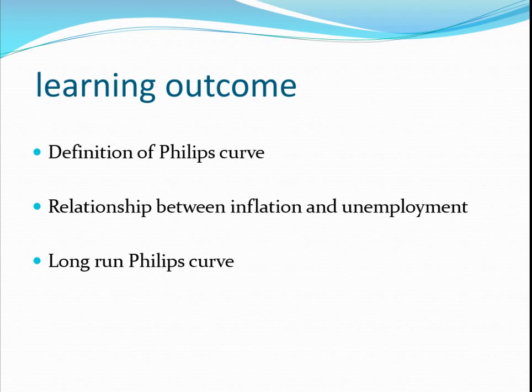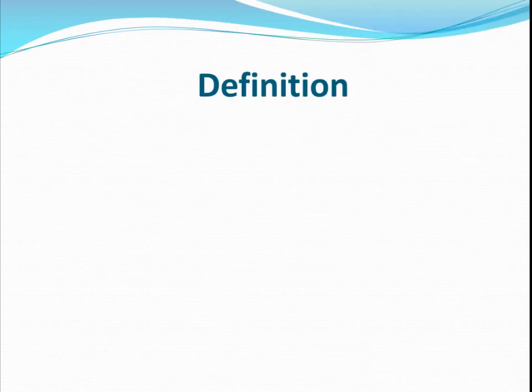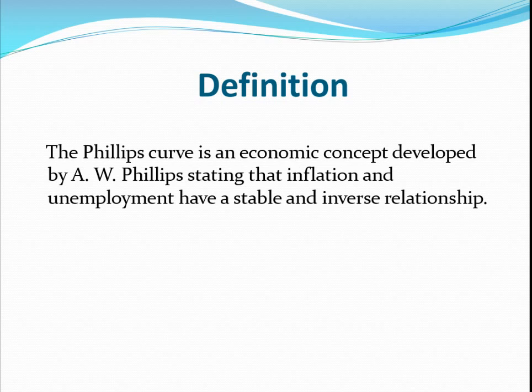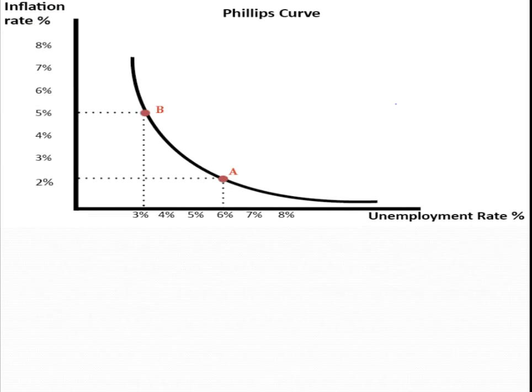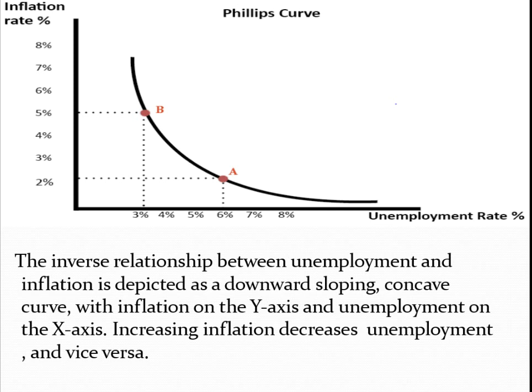Let's start the session with the definition of the Phillips Curve. The concept of the Phillips Curve was introduced by Mr. A.W. Phillips. He stated that inflation and unemployment have a stable and inverse relationship — there exists an inverse or opposite relationship between inflation and unemployment. The theory claims that with economic growth comes inflation, which in turn should lead to more jobs and less unemployment. When there is economic growth, the economy will have inflation as a byproduct, and as a result there will be more job opportunities and the rate of unemployment will be reduced.